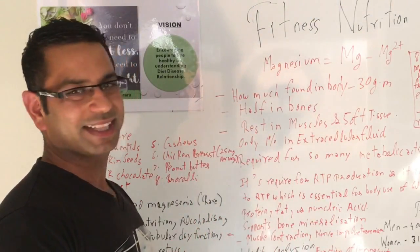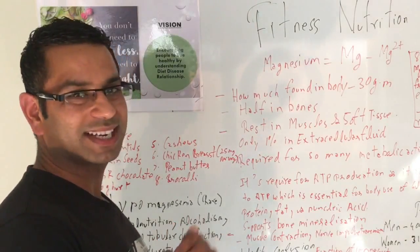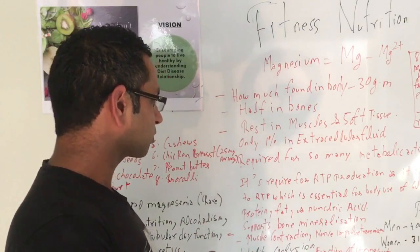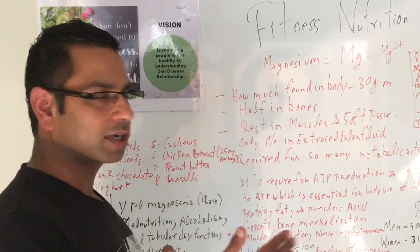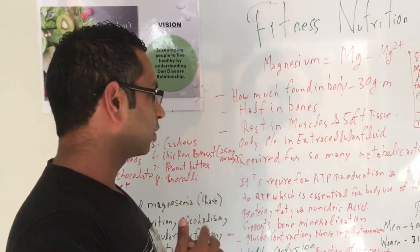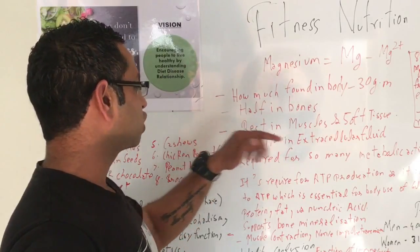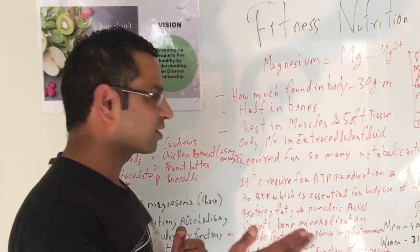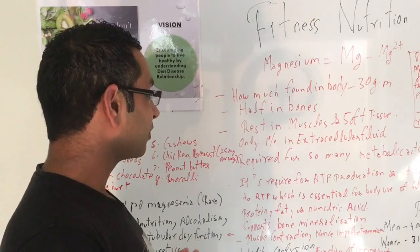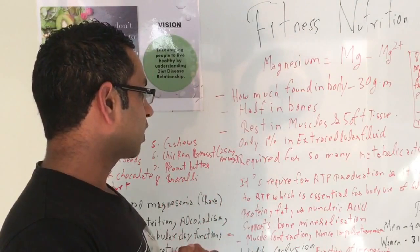And 33% is found in the extracellular fluid - that means it's outside the cell. Free magnesium is generally less than 1% found in your extracellular fluid.